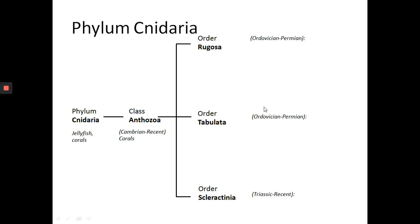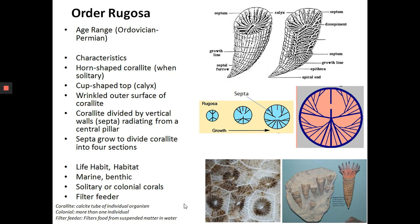When Rugosa and Tabulata went extinct, the Scleractinians became the dominant type of corals, probably replacing the niche left vacant by the other types. All the corals you observe in modern-day oceans are members of order Scleractinia. Going through the three orders of corals one by one — first order: Rugosa. Age range: Ordovician to Permian.